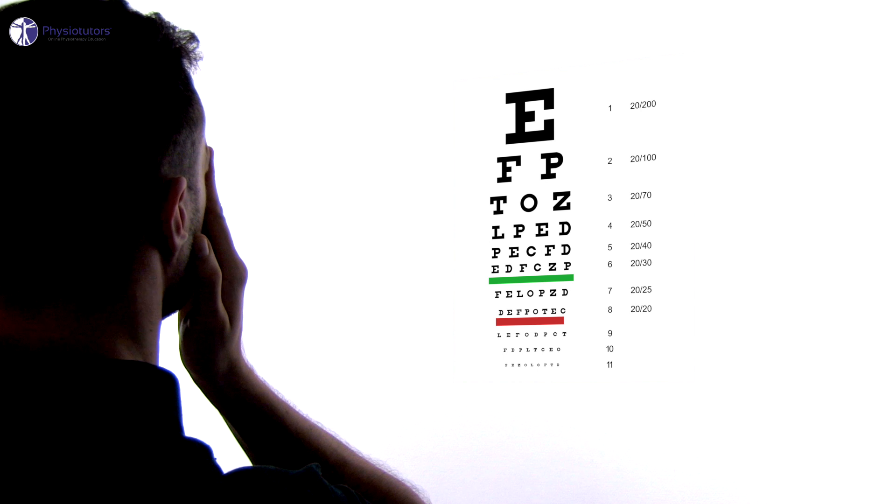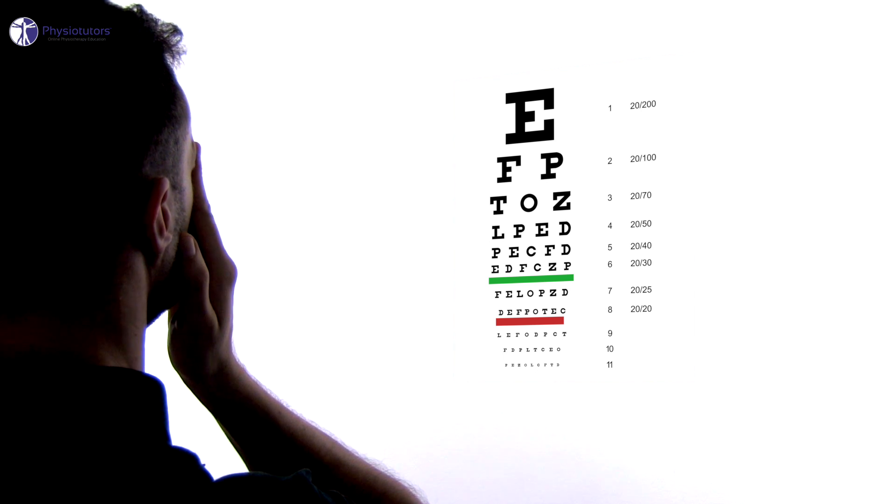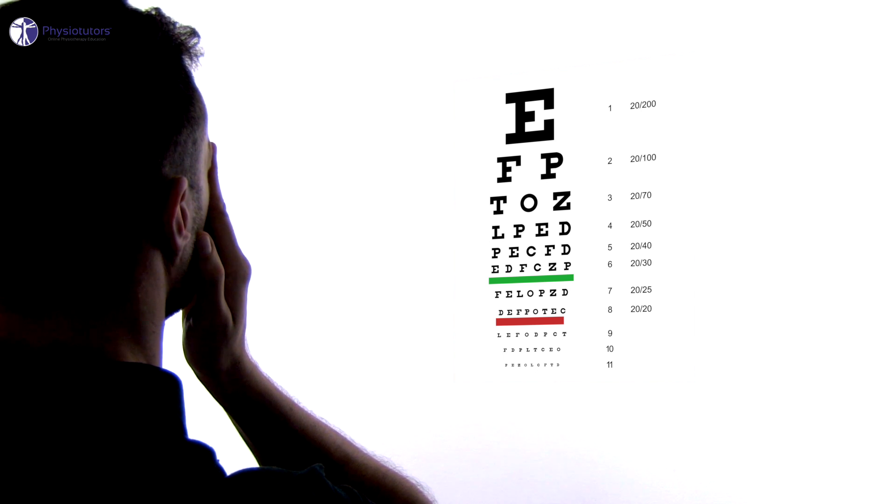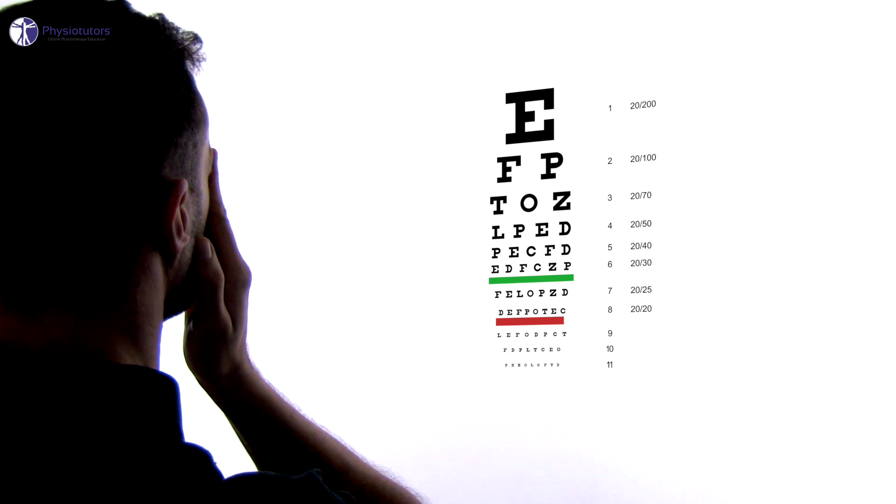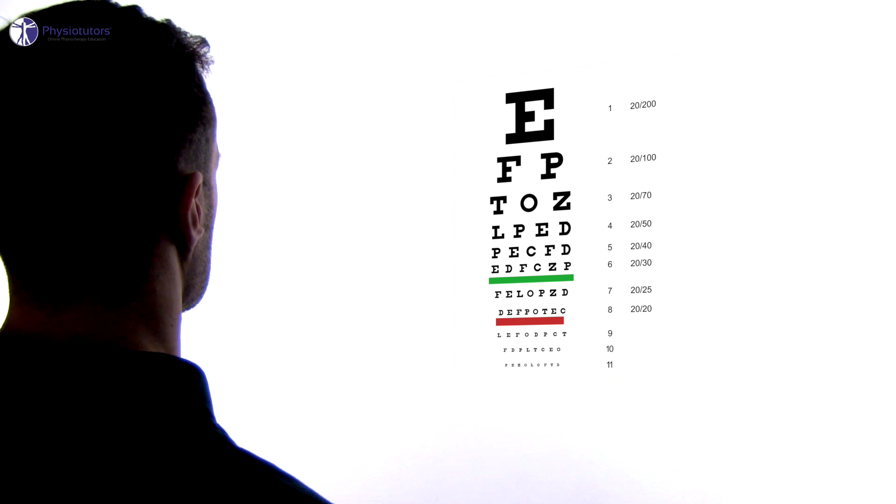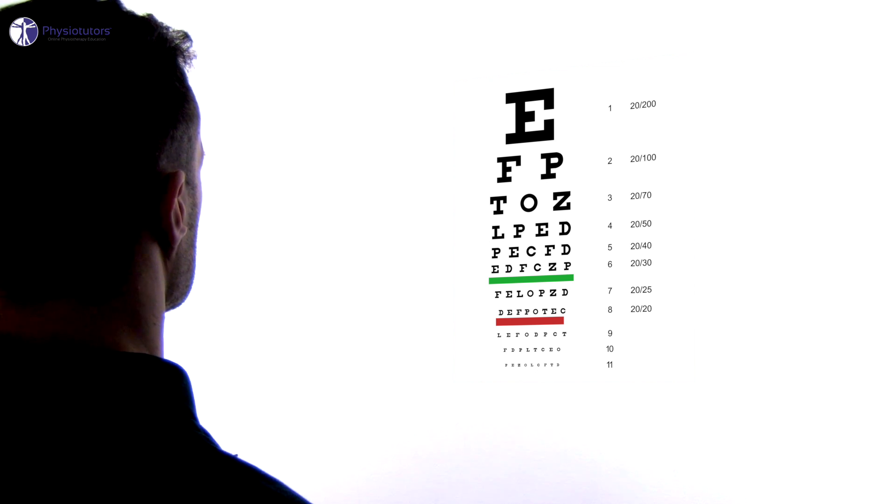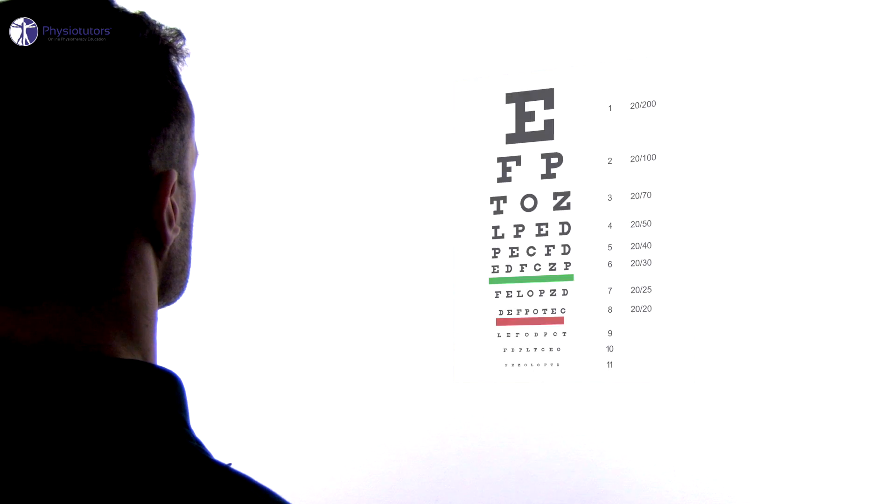E, F, P, T, O, Z, L, P, E, D, P, E, C, F, D. In case uncorrected acuity is less than 20-20 or 6-6 vision, you can use a pinhole test, where the patient reads through a 2 mm pinhole in a piece of cardboard or special device.